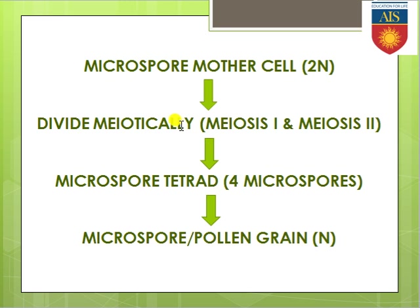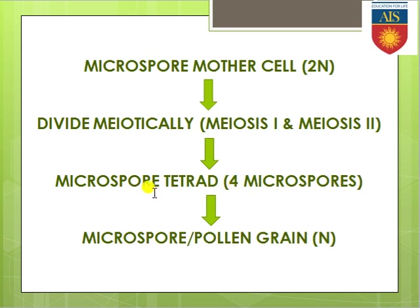When the microspore dyad enters meiosis II, it forms the microspore tetrad — meaning four microspore cells are present in a tetrahedral arrangement. That specific structure is commonly called the microspore tetrad. Keep it in mind: four microspores are there in tetrahedral arrangement, which is why this name has been given.